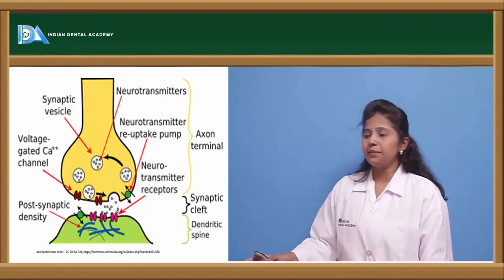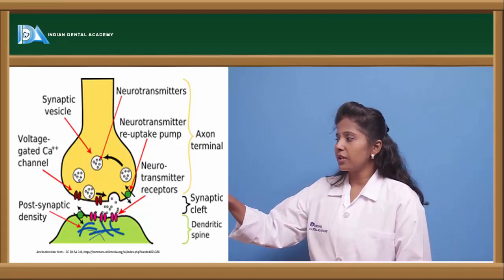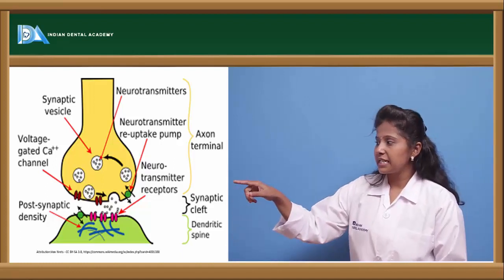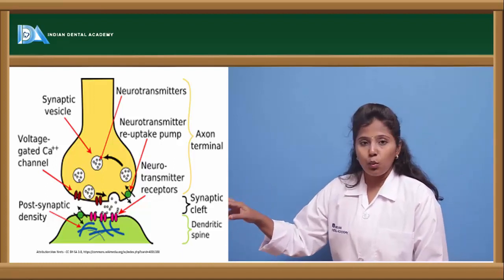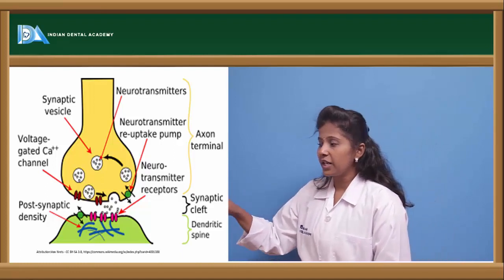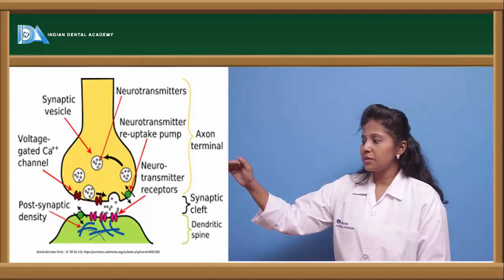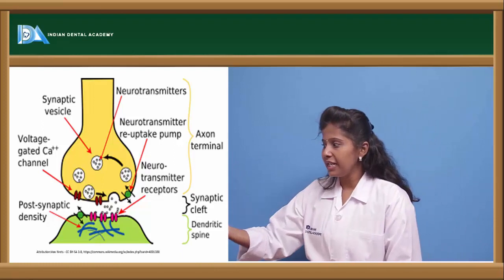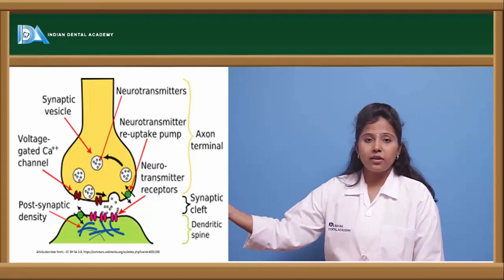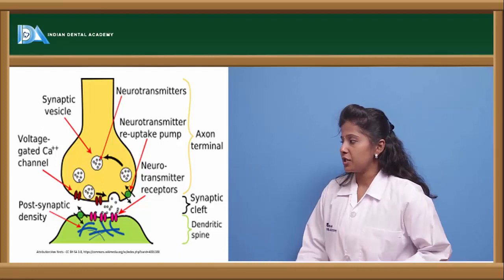Here we can see the pictorial representation. Once the neurotransmitters are synthesized, we can see the synaptic vesicles where the neurotransmitter is stored. Once released, it binds to particular receptors and exerts its actions.